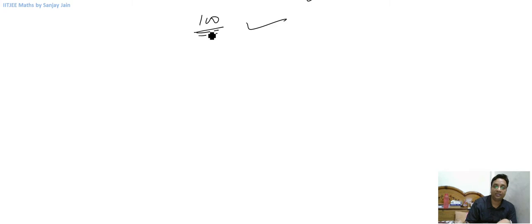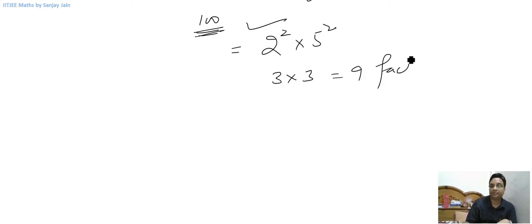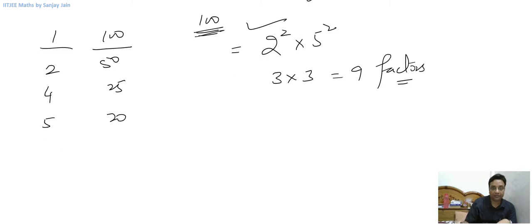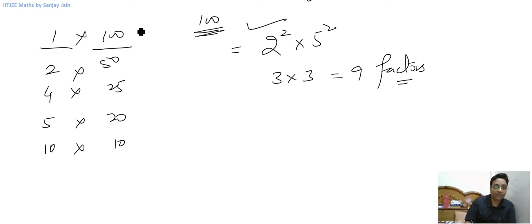Let's look at the number 100. 100 is a perfect square. Its prime factorization is 2 squared into 5 squared, so the total number of factors of 100 is 9. So if you want to express 100 as a product of two factors, it can be done as: 1 into 100, 2 into 50, 4 into 25, 5 into 20, and 10 into 10. So these are 5 ways.